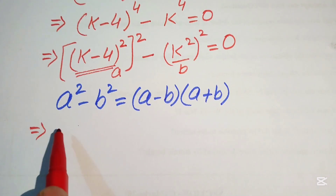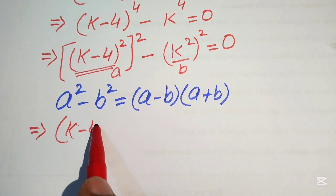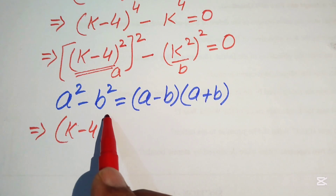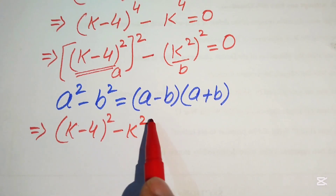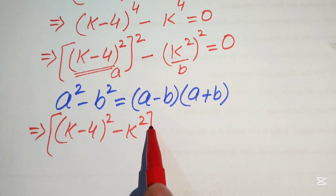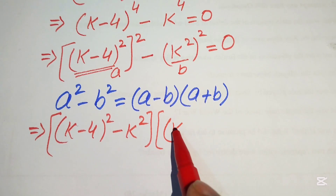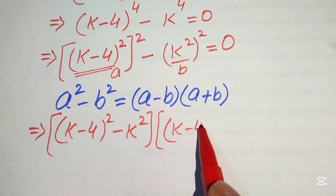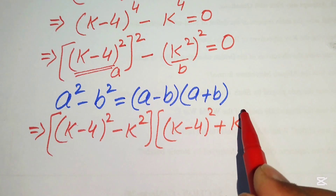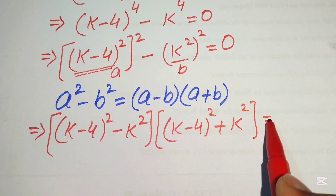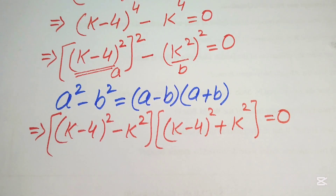Using this formula, the expression is written as [(k − 4)² − k²] times [(k − 4)² + k²] = 0.